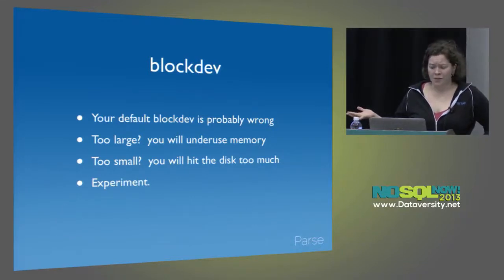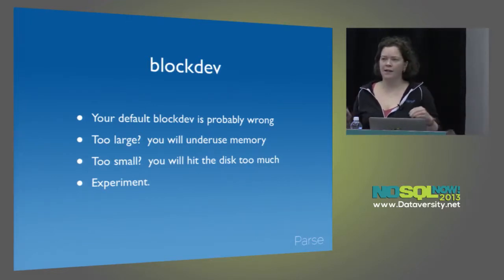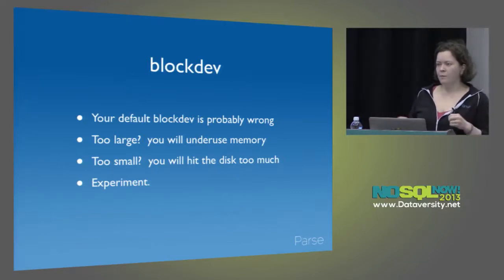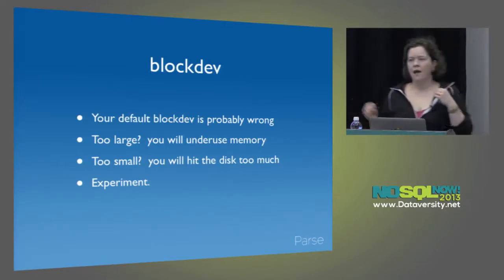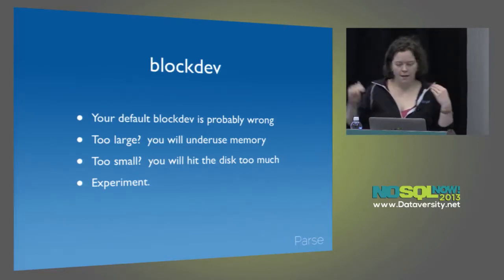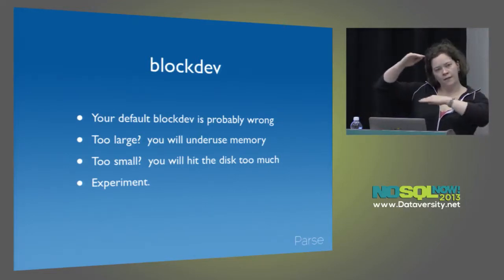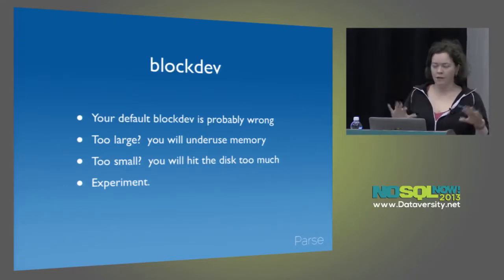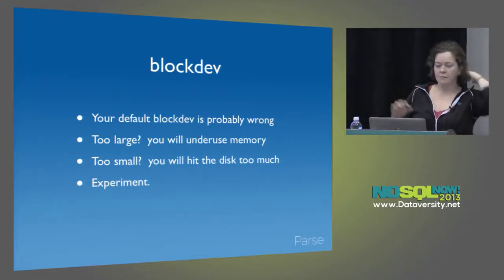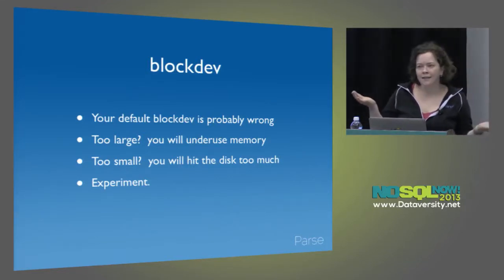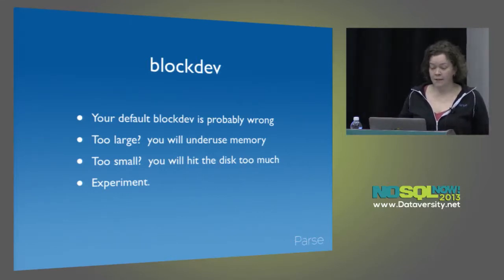Your default block device settings are wrong. On Ubuntu, the default read-ahead is 2048, which is huge. You probably want it somewhere between 32 and 512. If your block device read-ahead is set too large, every time you read something from disk you're going to be paging in a lot of empty space. The number one sign that your block device settings are wrong is that you're not fully utilizing all of the memory on the box. At one point, we were only using 12 gigs of our 68-gig RAM because our block device settings were set way too big — so we had all this blank space we were paging into memory.